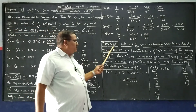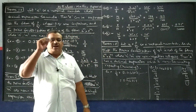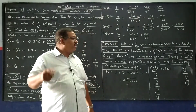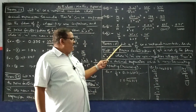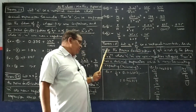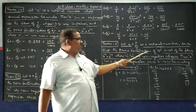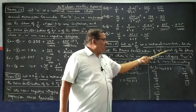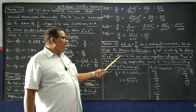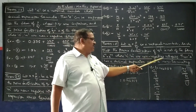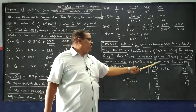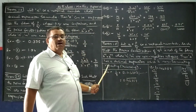Now theorem 1.5 — this is about non-terminating recurring decimals. Let x = p/q be a rational number such that the prime factorization of q is NOT of the form 2^n × 5^m, where n and m are non-negative integers. Then x has a decimal expansion which is non-terminating, repeating or recurring.